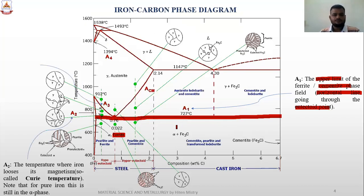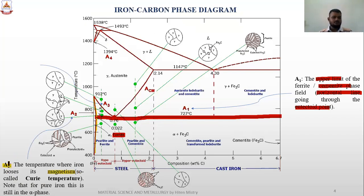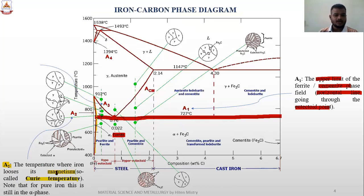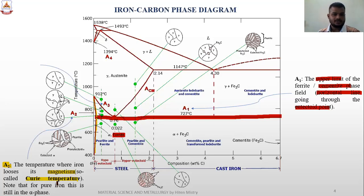Now we are going to talk about A2. A2 is the temperature where iron loses magnetization. A2 is the structure at which iron loses magnetization. It is basically in the alpha phase, but there is a change in property - from non-magnetic to magnetic structure.